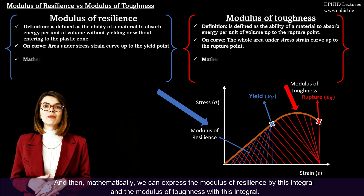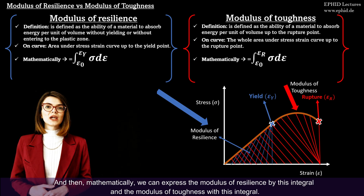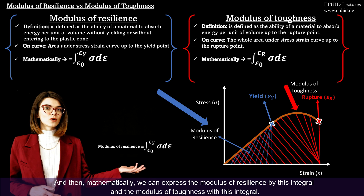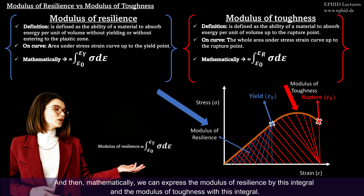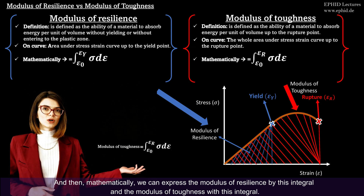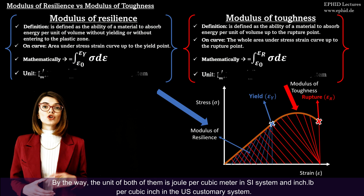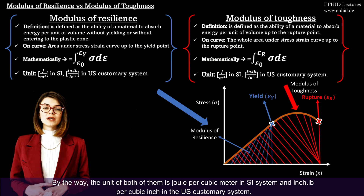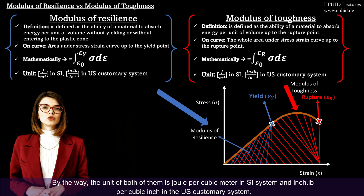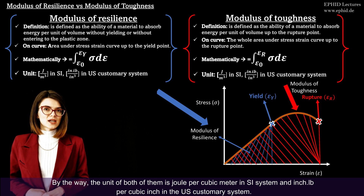Mathematically, we can express the modulus of resilience by one integral and the modulus of toughness with another integral. By the way, the unit of both is joule per cubic meter in the SI system, and inch-pound per cubic inch in the US customary system.